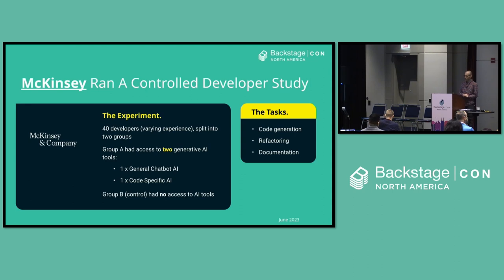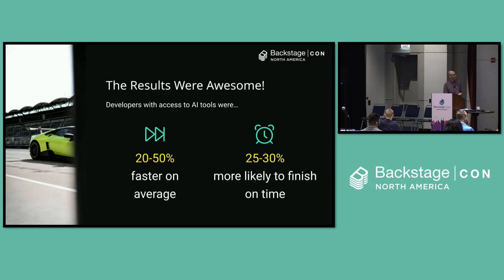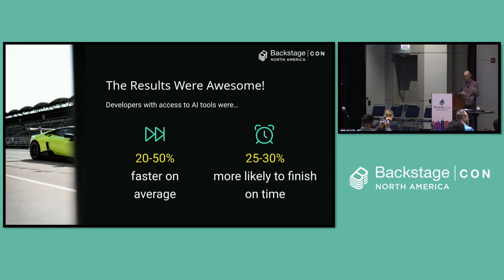Group B, the control group, didn't have access to any AI technology whatsoever — they were just doing tasks as they would normally do them before AI came along. The tasks themselves were code generation, refactoring, and documentation — pretty standard bread-and-butter things for developers. The results were pretty awesome. Developers with access to the AI tools saw a 20% to 50% speed increase — they were faster on average by 20% to 50%, depending on the task.